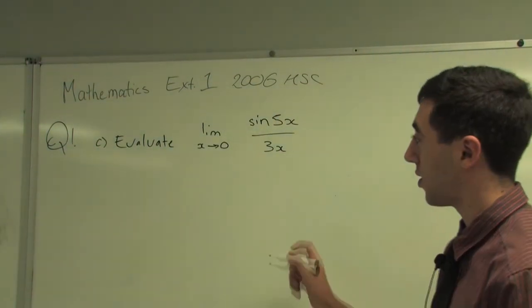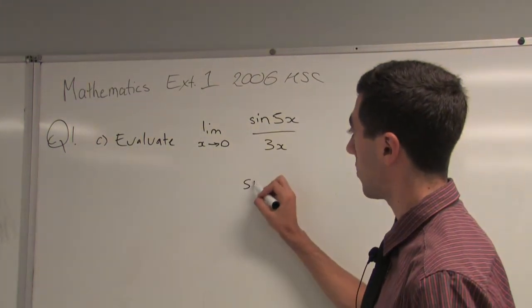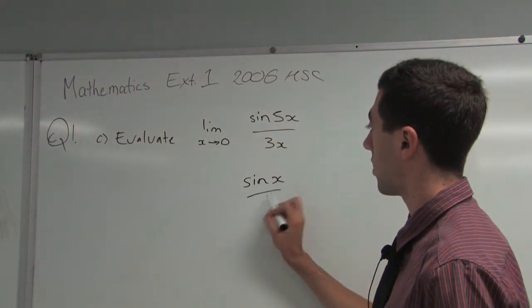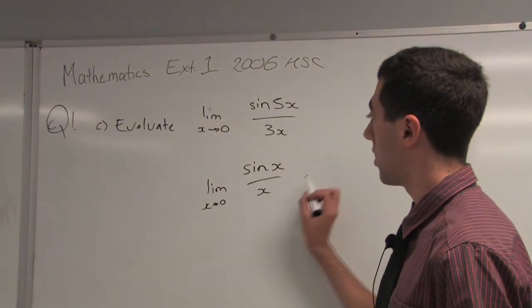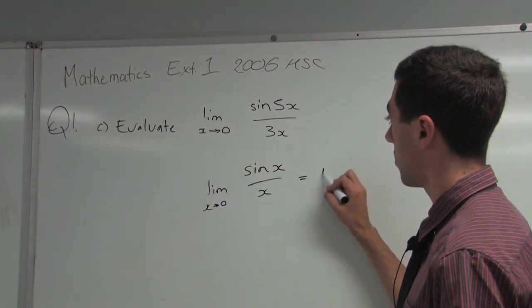As we know, the standard definition for sine x over x: when we have the limit as x approaches 0, this converges to 1.